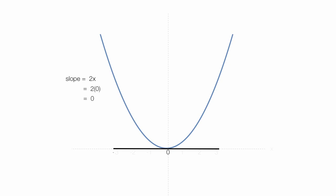So now, let's imagine that x is 2, and the slope of that tangent line is 2 times 2, for 4. The slope is 4.